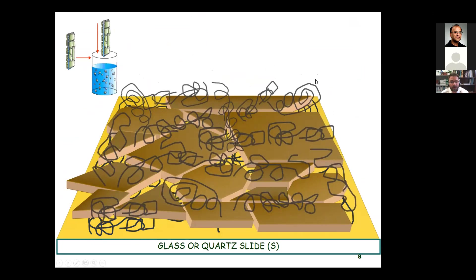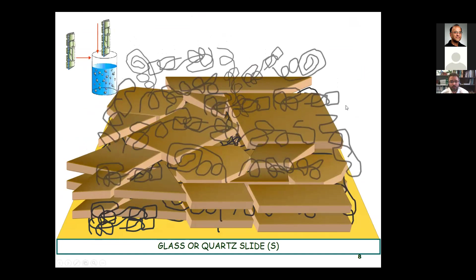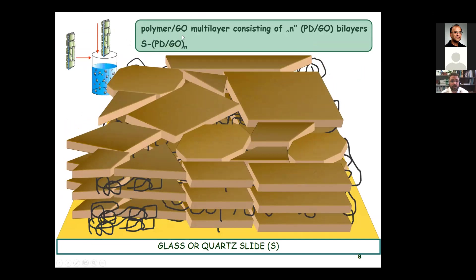After repeating these steps in a cyclic deposition, we can create a multilayer, which I denote as (PDDA/GO)^N — the polyelectrolyte PDDA and graphene oxide GO repeated N times. So this is a bilayer, and we can repeat the bilayer deposition N times to create a multilayer like this.